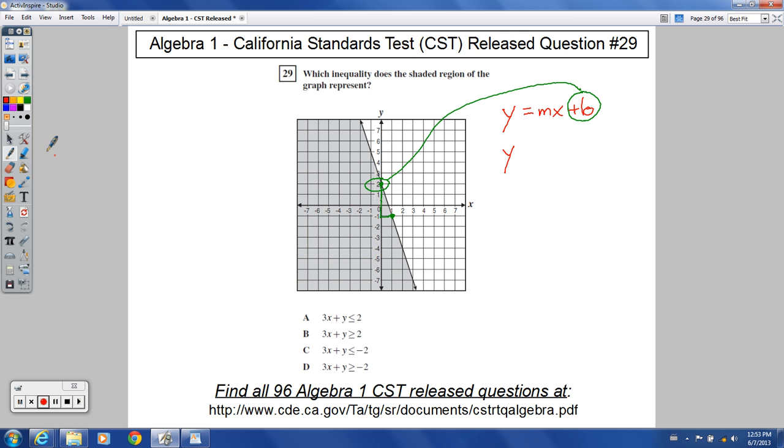So from there, though, we've got a slope of—it's rise over run—negative 3 over positive 1, which would be the same thing as just saying negative 3. So you're going down 3, right 1, that's your slope.